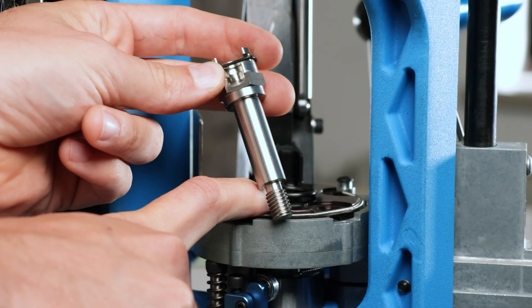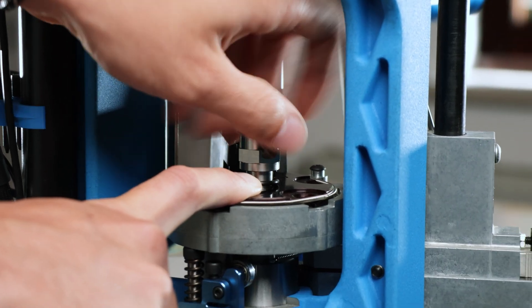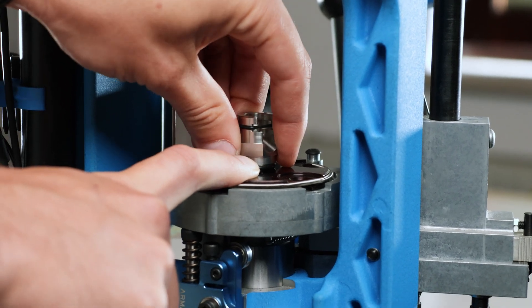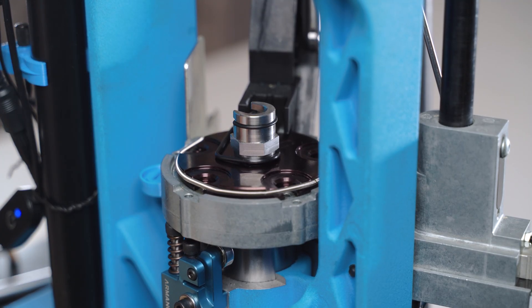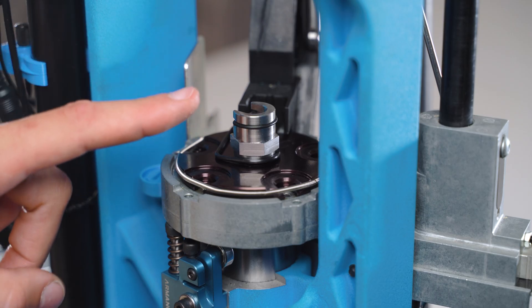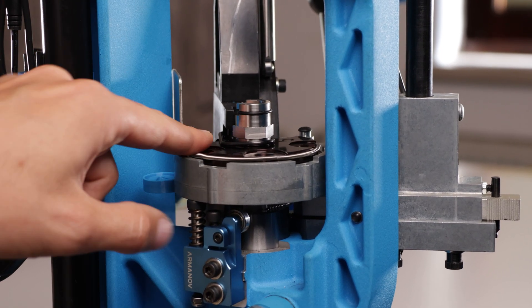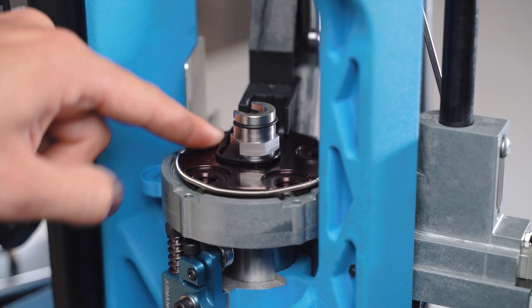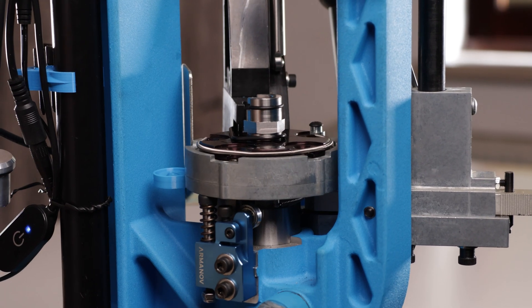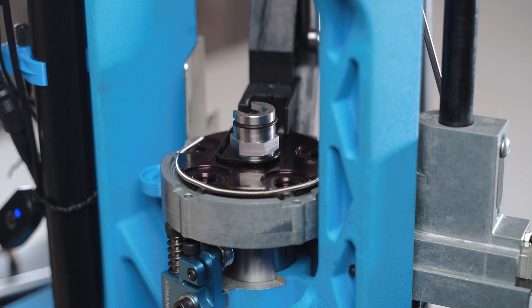And install the Armano single stage conversion bolt instead of the original. When you have the bolt installed, just check so you have enough spring tension on the bolt that regulates the movement of the shell plate.